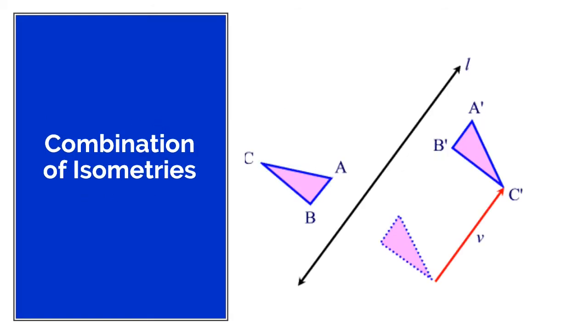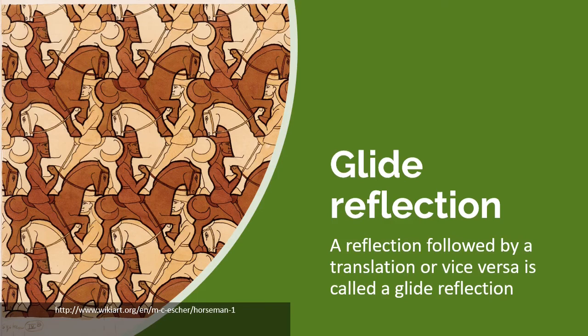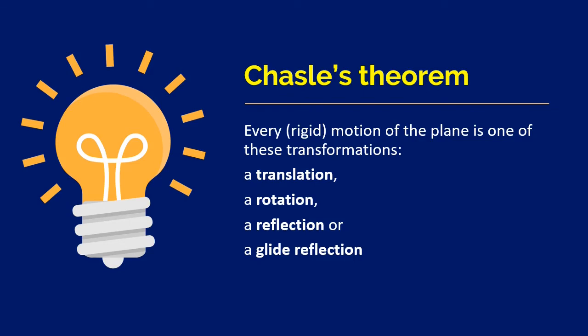We have a combination of isometries. For example, in this case, what happened with this triangle? We reflected it along this line L, and then what did we do? We translated it along this direction, vector V. This kind of isometry is what we call a glide reflection, meaning to say it is a reflection followed by a translation or vice versa. It doesn't really matter where you start, you will end up with the same figure. Now this is Chasley's theorem. This one is saying that every motion of the plane is one of this transformation. It's either a translation, rotation, reflection, or glide reflection.